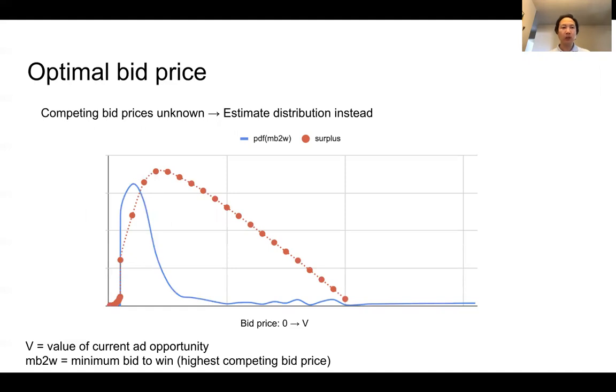If we knew how our competitors are going to bid, we could simply bid slightly higher. However, this is generally not possible.